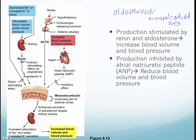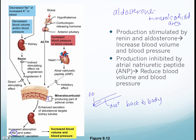What does aldosterone do? Aldosterone works downstream in the kidneys. It increases the absorption of sodium — here we have a kidney collecting duct. If we reabsorb sodium back into the body, water is also going to follow due to osmosis. Because water follows sodium, you're going to increase blood volume, and in turn increase blood pressure.